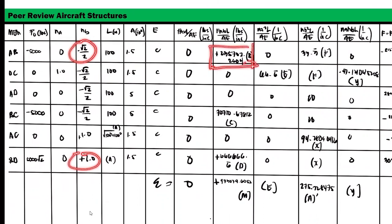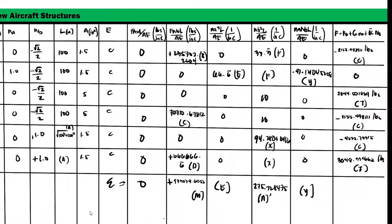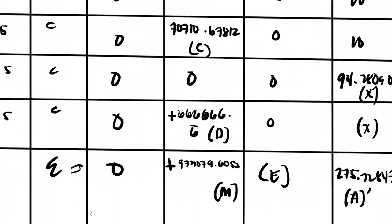And then positive 66.666 repeating to infinity. Okay, and then the summation of our NFL over AE, which became positive 973079.6052. Okay.